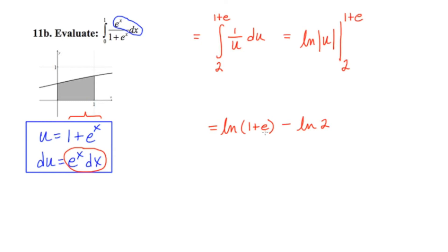And you might be wondering why I dropped the absolute value bars. Well, e is about 2.718, and 2.718 plus 1 is certainly something positive, so there's no need for the redundancy of having the absolute value.